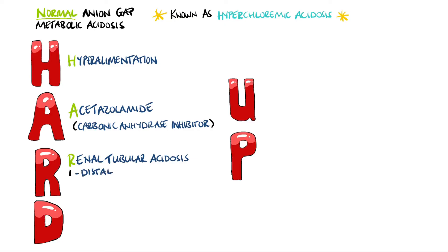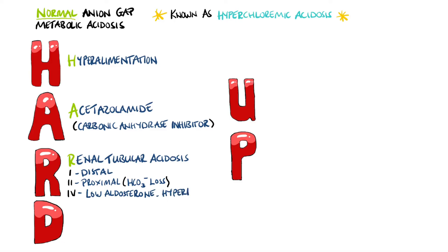Specifically, type 1, which is distal; type 2, which is proximal and causes bicarbonate loss; and type 4, which is due to low aldosterone and features hyperkalemia. D is for the other big cause, diarrhea.